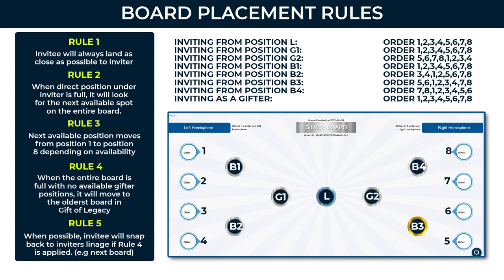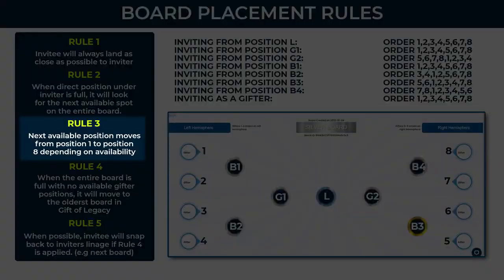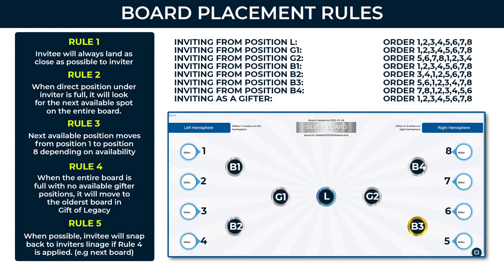Rule number 3: the next available position moves from position 1 to position 8 depending on availability. Wherever there's a spot available on the entire board, it will flow from 1 to 8, skipping positions that are already filled.